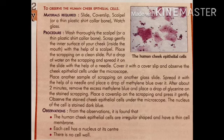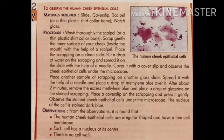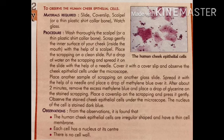Place that scraping on a clean slide. Put a drop of water on the scraping and spread it on the slide with the help of a needle. Cover it with a cover slip and observe the cheek epithelial cell under the microscope. Place another sample of scraping on another glass slide, spread it with a needle, and place a drop of methyl blue over it. After about two minutes, remove the excess methyl blue and place a drop of glycerin on the stained scraping.